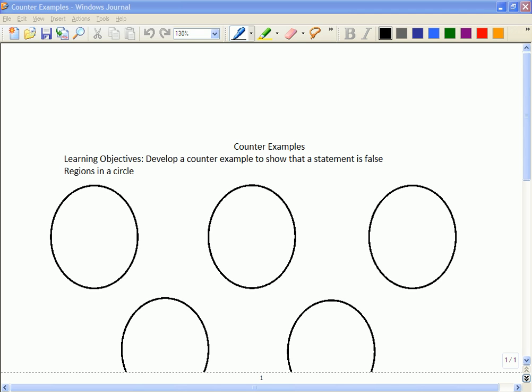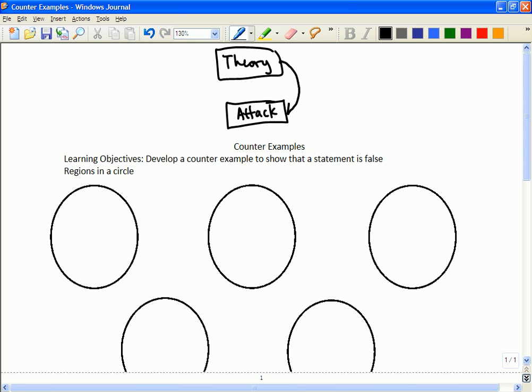Basically, there's this sort of cycle that you would do. As a mathematician, you come up with some theory that you have. And then you attack. And eventually, you attack your theory so much that you say, well, maybe my theory is true because I'm still not finding any examples that show me this theory is false.